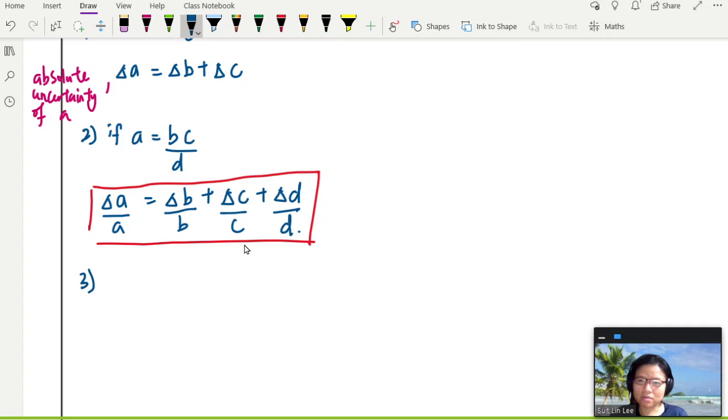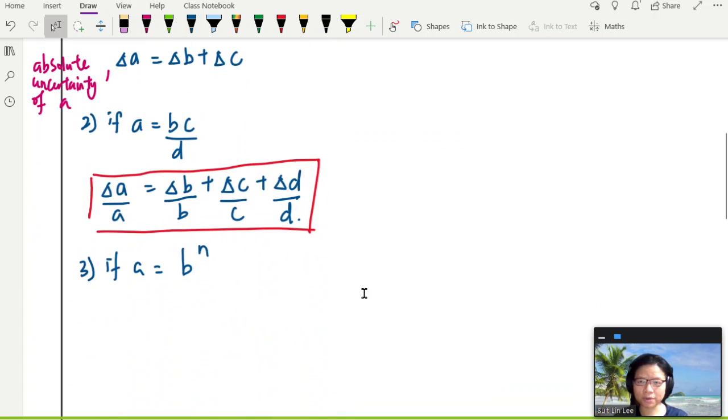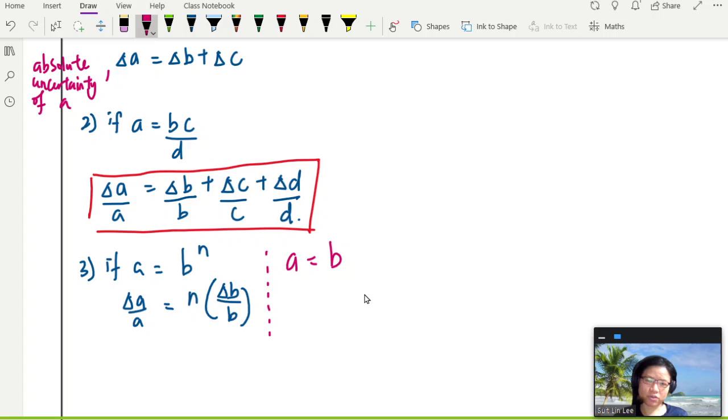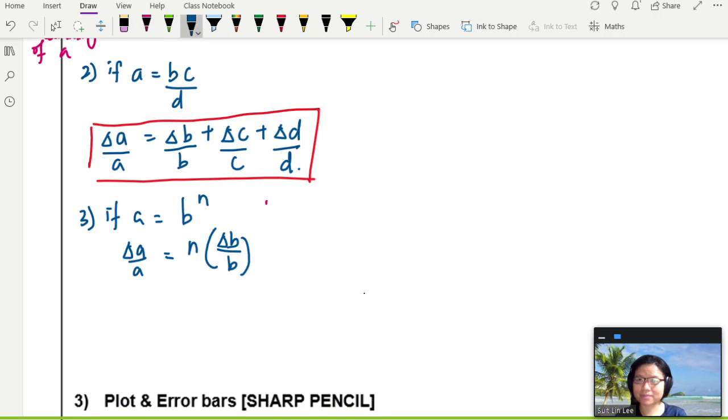So the third one is if A is B to the power of N. Then if you want to find the uncertainty in A over A, if you happen to know N, then your life is significantly easy already. You will take N times uncertainty in B over B. If the power is negative, it doesn't matter what this one is. Because if you take negative four, in fact, this example, the example that we will first discuss will involve a negative power. So don't worry about it. So I think this general one is good enough. Proceed to real examples so that the video is not too long.